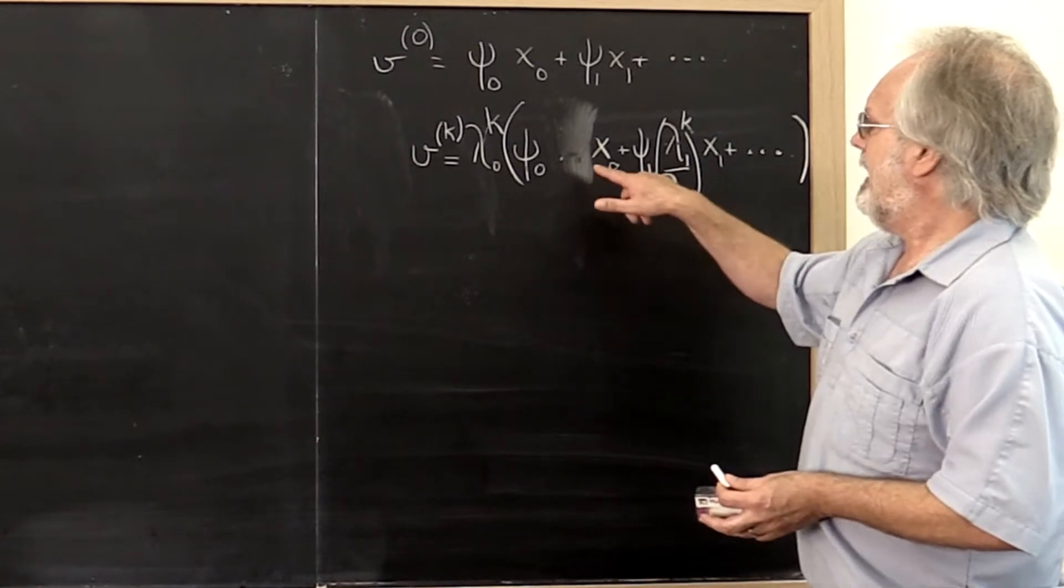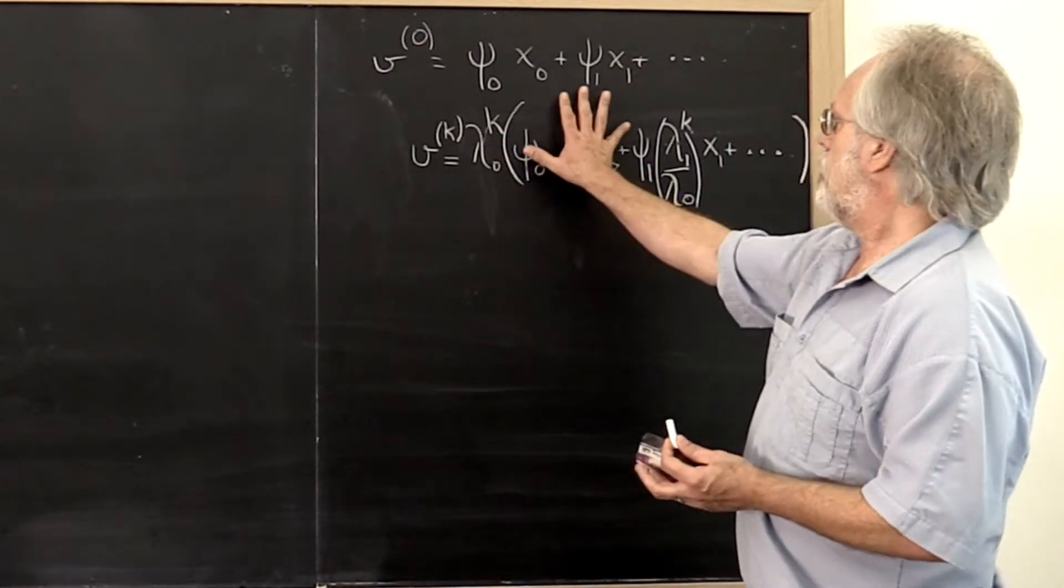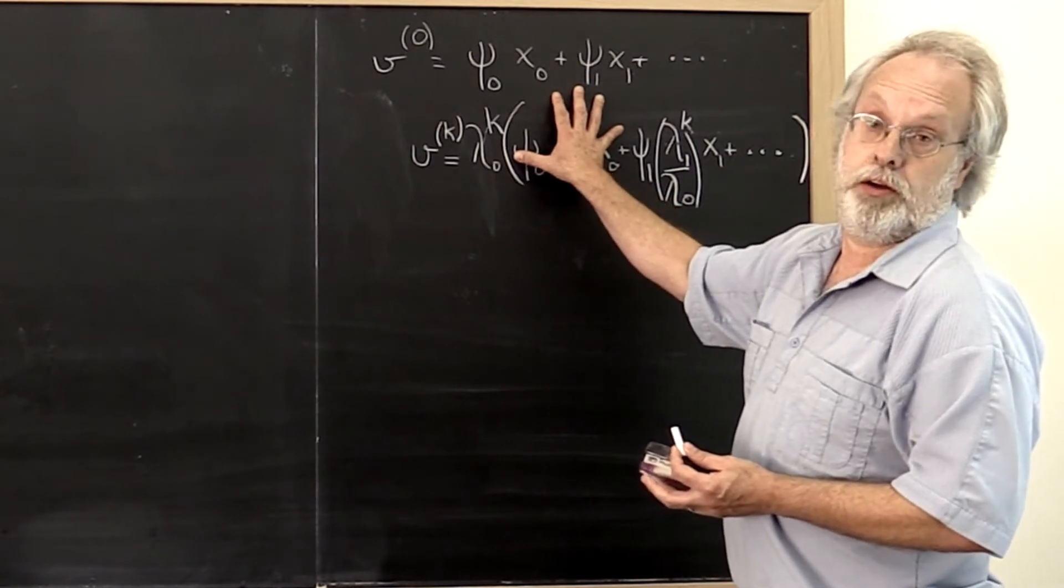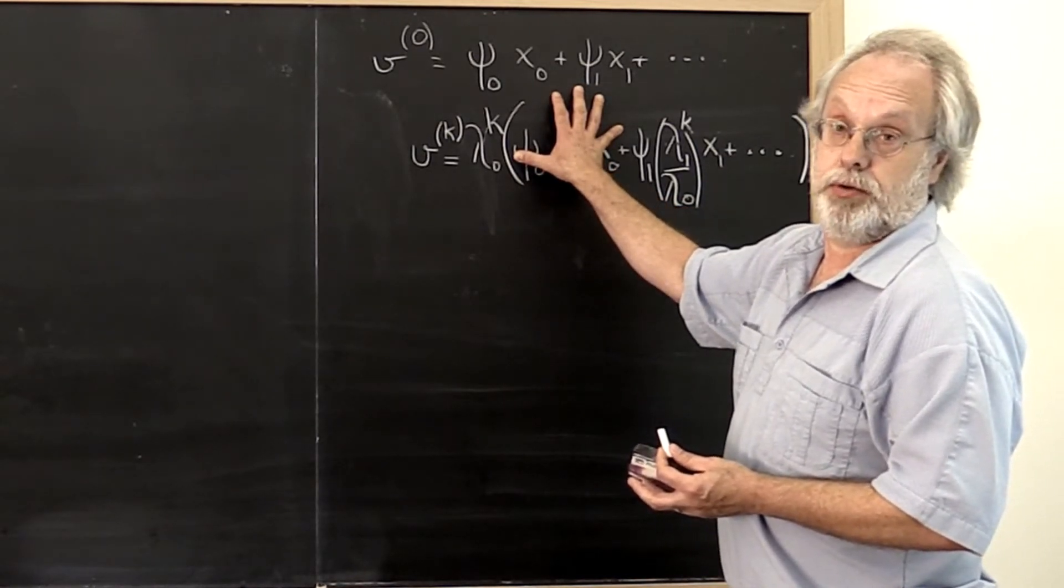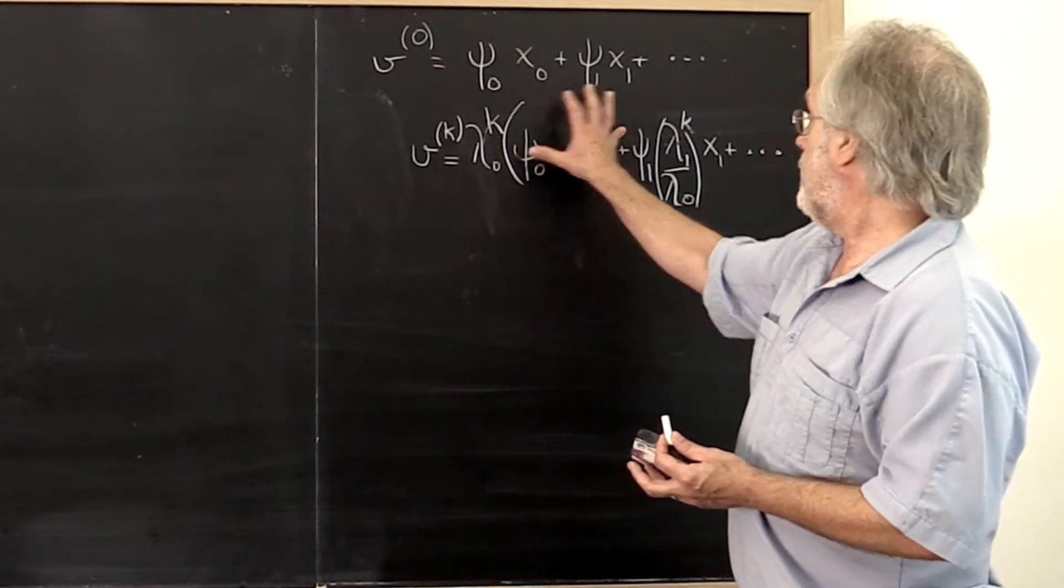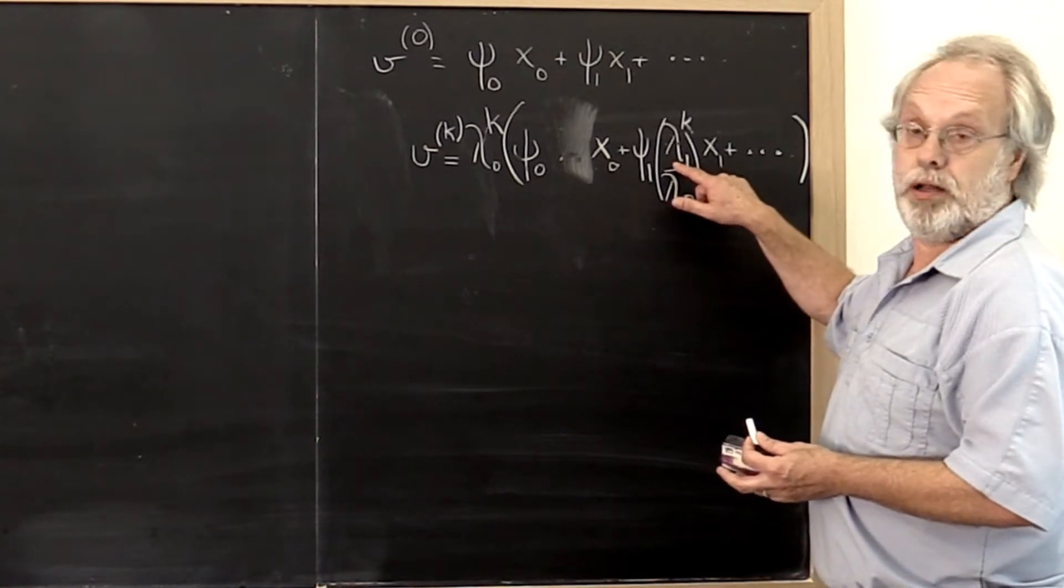Well, if we carefully chose our initial vector so that there was no term in the direction of x0, then we would start homing in on the eigenvector associated with lambda one.